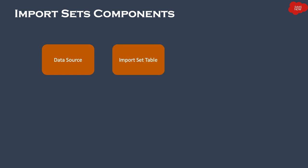Next is the Import Set Table, which is a staging area for records to be imported from the source. Before data is inserted or updated into the actual target table, it stays in the staging table, which has fields related to the source data. The name of this import set table is based on the name of the file you are importing.